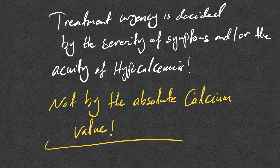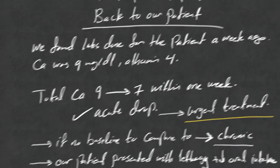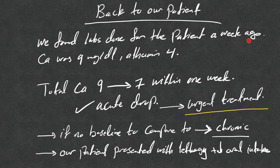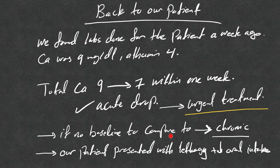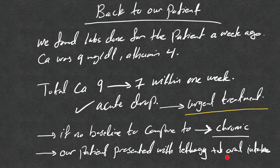Back to our patient: labs from one week ago showed calcium of 9 mg/dL with albumin of 4, so corrected calcium was 9. Now it's dropped to 7 — that's an acute drop within one week, which means urgent treatment is needed even if the patient is asymptomatic, because symptoms will likely develop soon. If there is no baseline and no symptoms, consider chronic. Our patient presented with lethargy and decreased oral intake, which could be attributed to UTI or hypocalcemia.